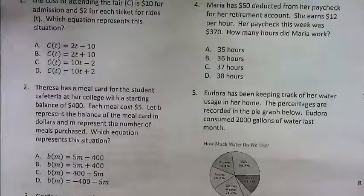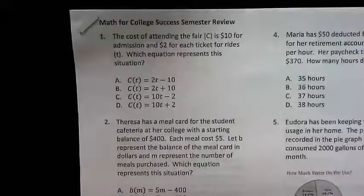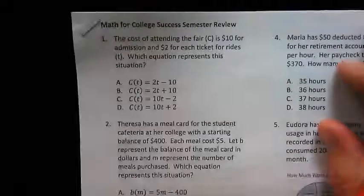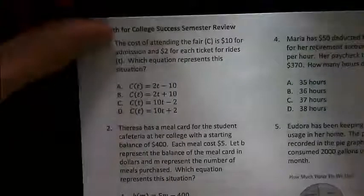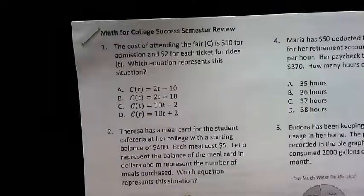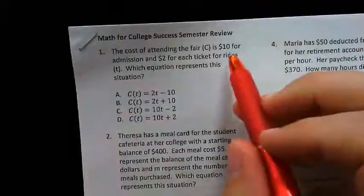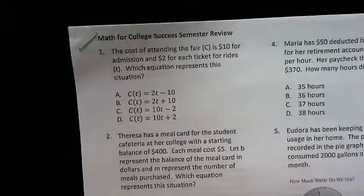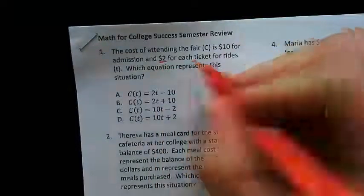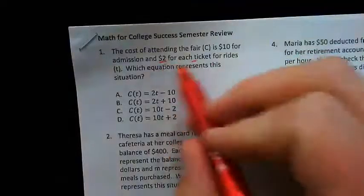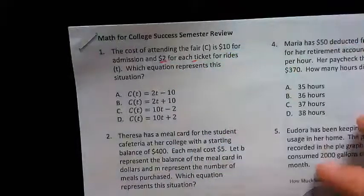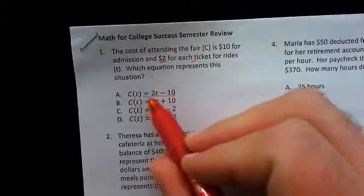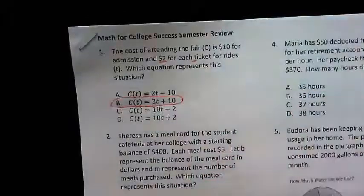We're going to go over the first 18 questions, which is the first page front and back for the review. On number one, the cost of attending the fair is ten dollars for admission and two dollars for each ticket for rides. The ten dollars is the fixed admission cost, and two dollars per ticket means we multiply two times t, then add the original ten dollars.